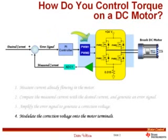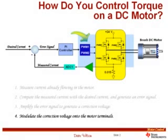These four steps constitute the process of current mode control, executed by a processor thousands or even tens of thousands of times per second. The key point: if you understand these four steps, you're well on your way to understanding field oriented control. In fact, FOC falls under these four basic steps, and at the top of every slide you can see which step we're on. With that said, let's look at how we control torque on an AC machine.